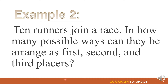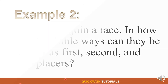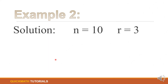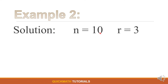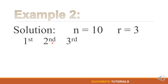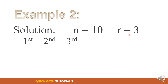For our second example, 10 runners join a race. In how many possible ways can they be arranged as first, second, and third places? For our solution, n is equal to 10 since there are 10 runners, and r is equal to 3 since we will arrange them as first, second, and third placers.